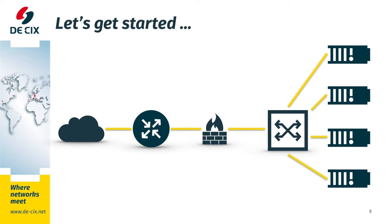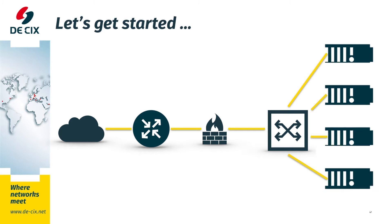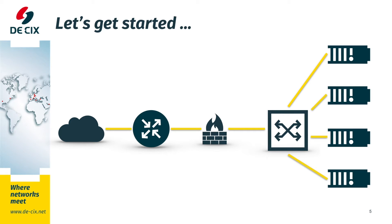This is your setup. You're hosting a few web servers, seen here on the right. They are connected to one or more switches. You have a firewall, and you have a router. And you have your connection to the internet via your upstream provider.